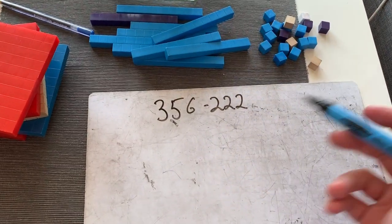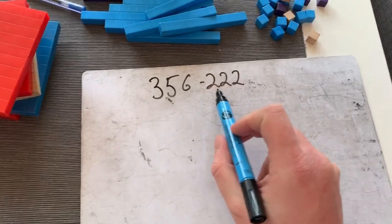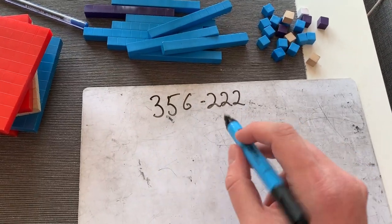Hi everyone, so this is a quick guide on how to do the expanded column method for subtraction. The first one I'm going to do is the first one in the pack, which is 356 minus 222.